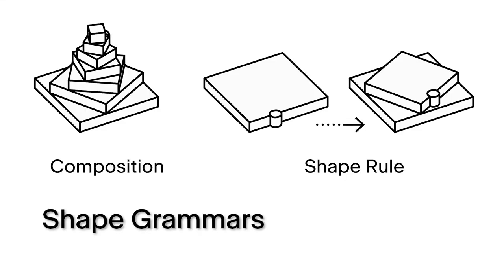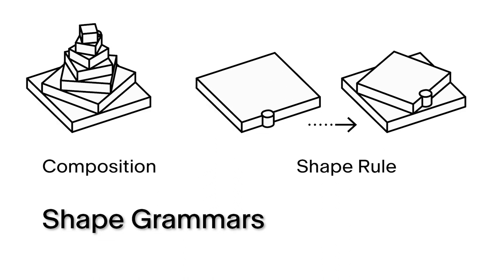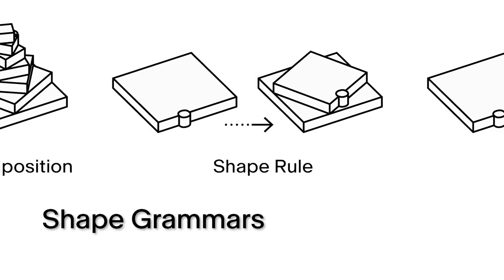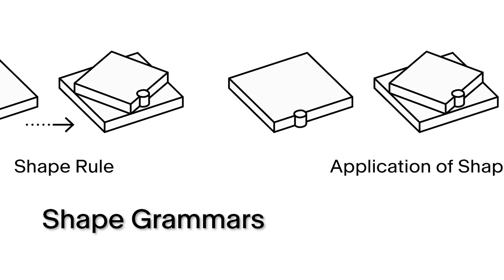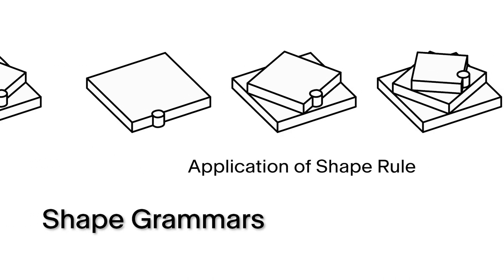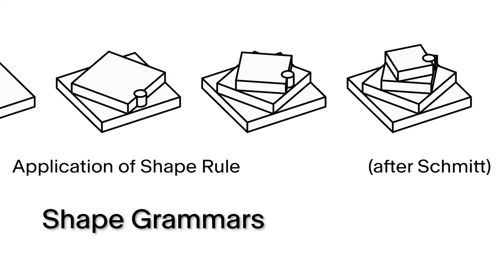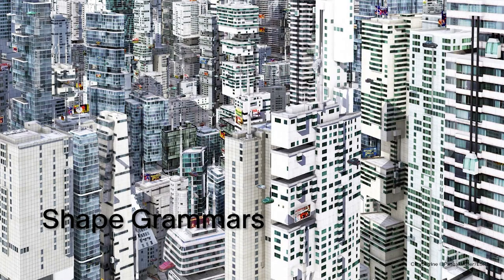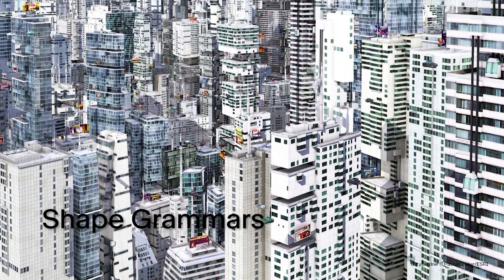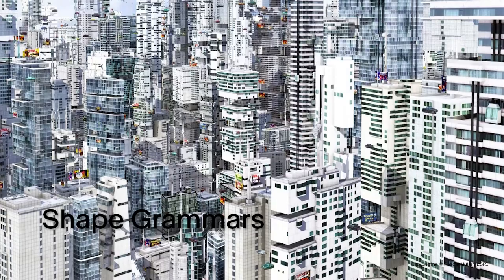Shape grammars are another powerful way to encode form on the computer. They have been used to encode architectural styles of architects, based on buildings they designed. In an early paper about shape grammars, this was done with Palladio's Villas. We will not go into shape grammars in much detail here, except as to say that they are at the heart of such systems as CityEngine, a software that allows you to generate whole cities in a certain style.